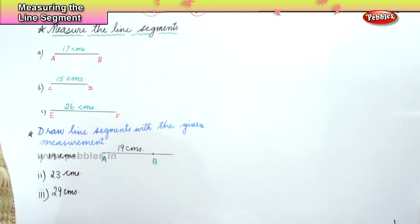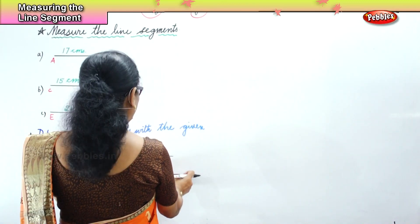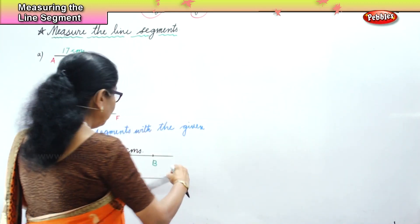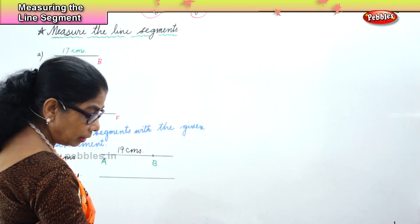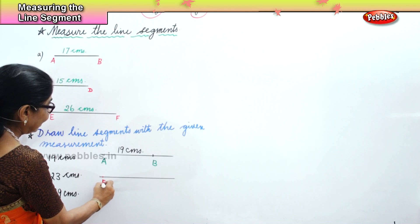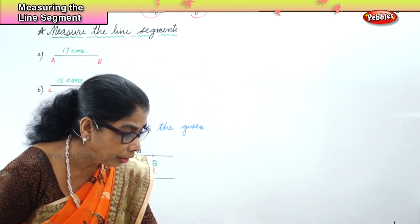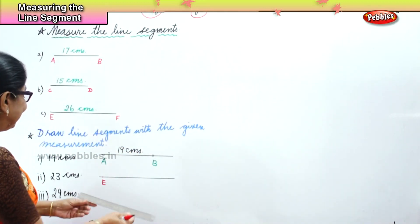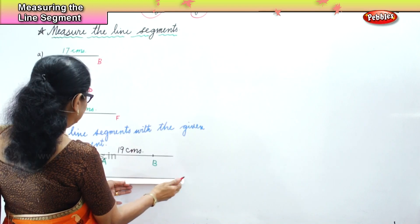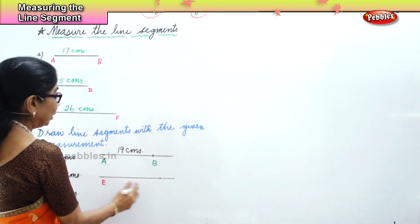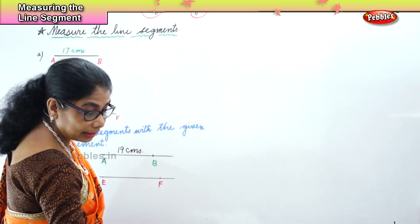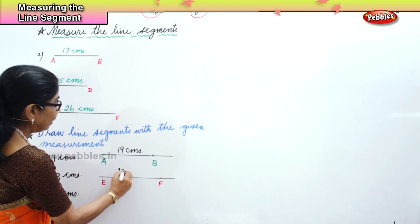Now we are asked to draw a line segment of twenty-three centimeters. So you draw another line, mark out a point and call that point E. Then put your ruler on point E, look out for twenty-three, and mark that point as F. Line segment E-F is twenty-three centimeters.